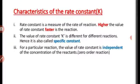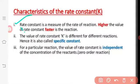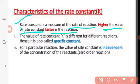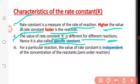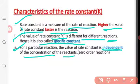What are the characteristics of rate constant? The rate constant measures the rate of reaction — the higher the value of rate constant, the faster the rate of reaction. The value of rate constant is different for different reactions, so it is also called the specific constant. For a particular reaction, the value of rate constant is independent of the concentration of reactant — this is called a zero order reaction, meaning the rate does not depend on the concentration of reactant.